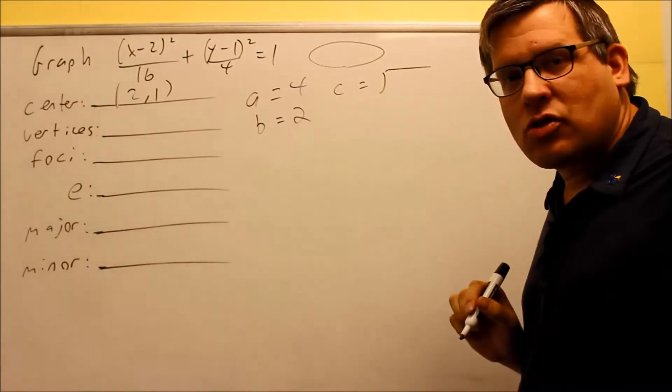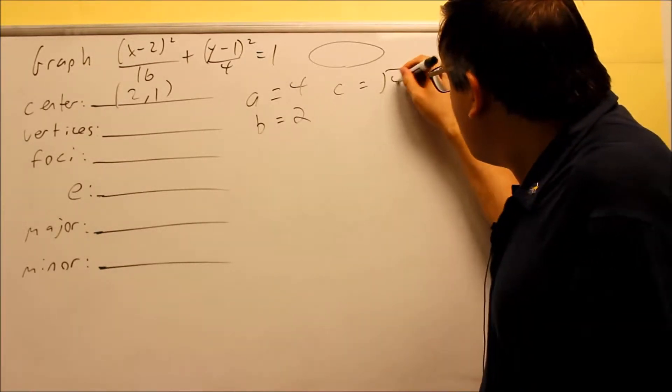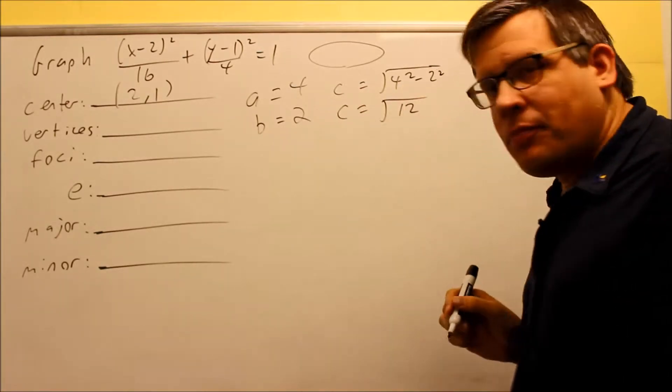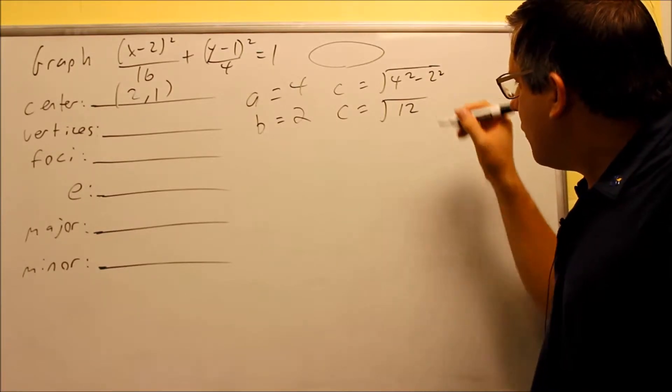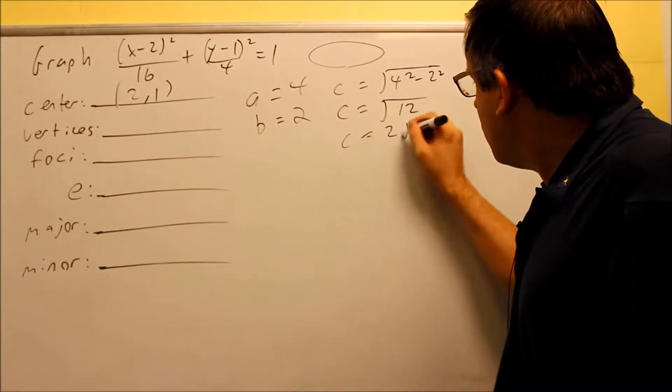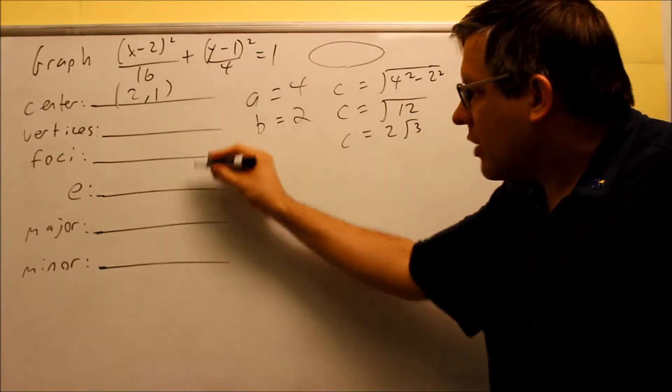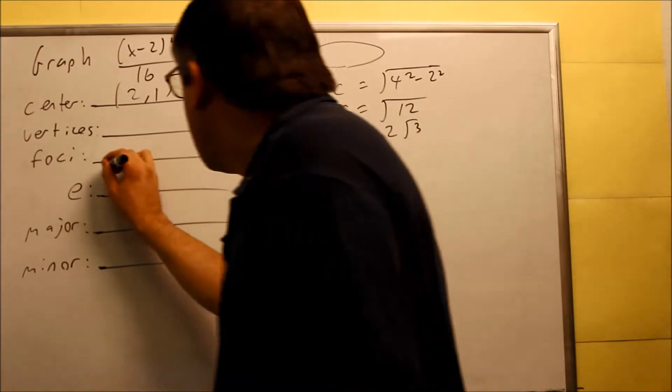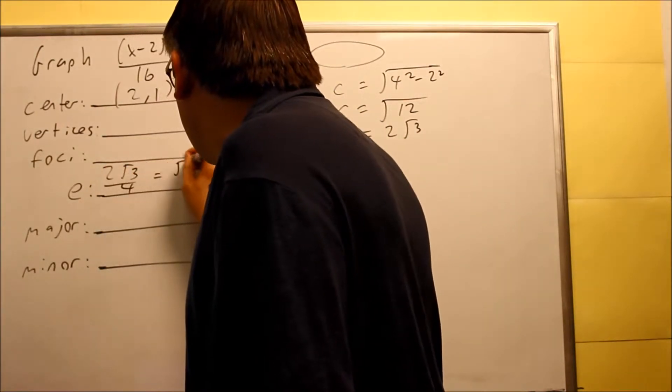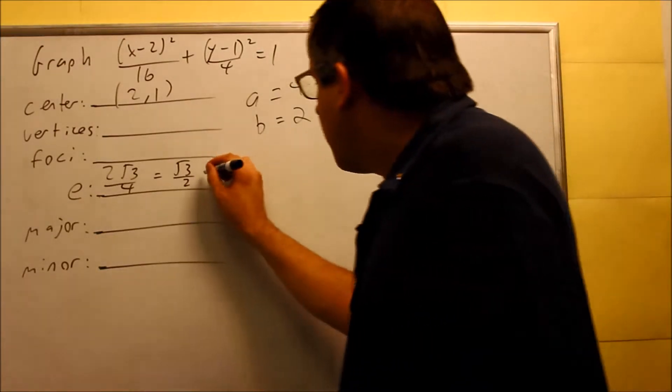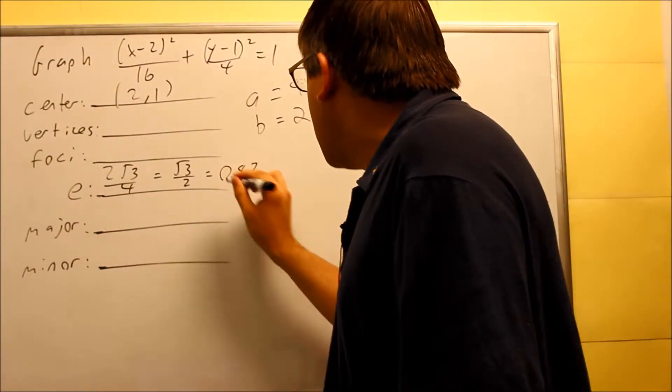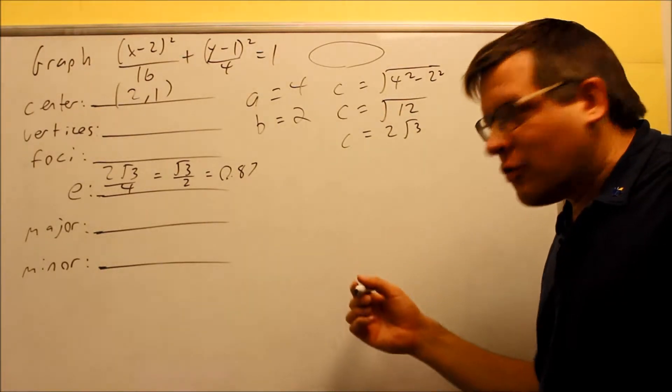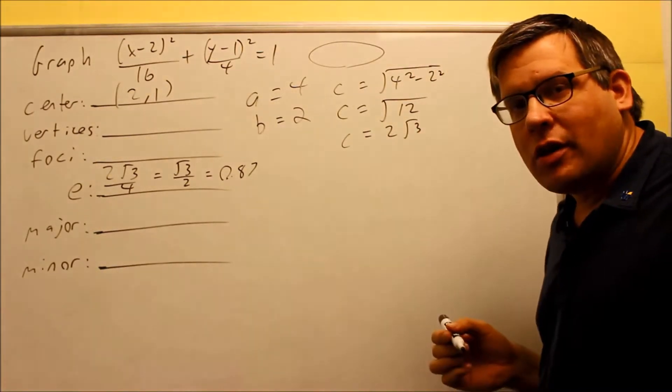You can find the c value also. Square root of a squared minus b squared is still the same formula we had before. So you're going to do 4 squared minus 2 squared on that one. 16 minus 4 is 12, and we can take the square root of 12. 4 is going to come out, so we can write this as 2√3. That's our c value. So now we can answer this question here. The eccentricity is c over a, so the exact value would be 2√3 over 4, which is √3 over 2. And if you turn that into a decimal, that's about 0.87. So 0.87 is not quite as narrow as the previous example we did that was 0.94, but it's still going to look fairly narrow because it's still farther away from 0.